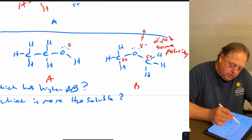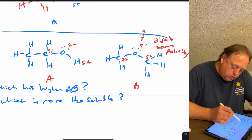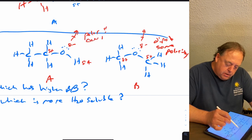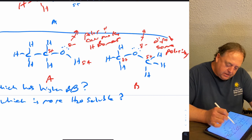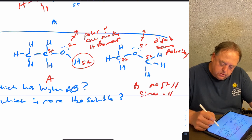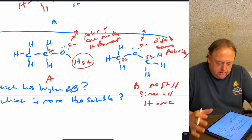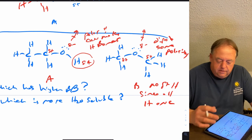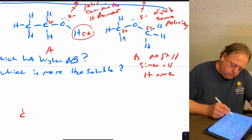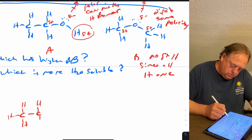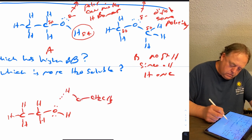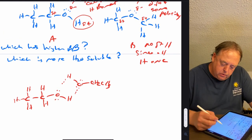Molecule A has polarity — oxygen is partial negative, hydrogen is partial positive, carbon is partial positive — so it has a dipole and can make hydrogen bonds because it has a partial positive hydrogen. Molecule B has no partial positive hydrogen since all hydrogens are on carbon, so molecule B cannot make hydrogen bonds to itself, whereas molecule A can. Molecule B would only have dipole-dipole attractions.